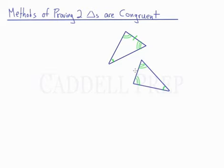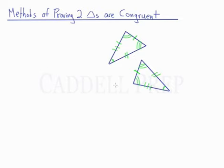This side is congruent to this side, this side is congruent to this side, and this side is congruent to this side. So all the angles and all the sides are congruent. However, to prove that these two triangles are congruent, we don't have to prove that all of these are congruent to each other. There are a few things we have to prove congruent, and if that's true, then we know for a fact that everything else is congruent as well.